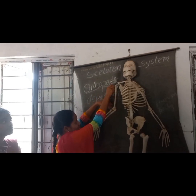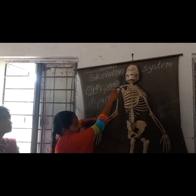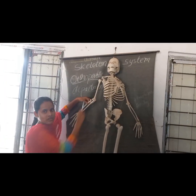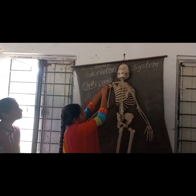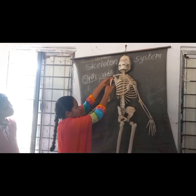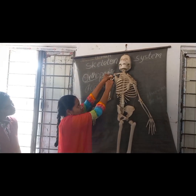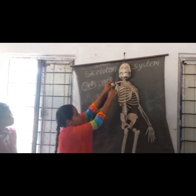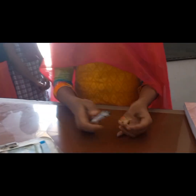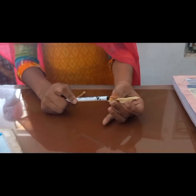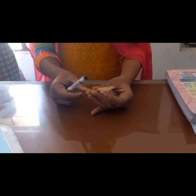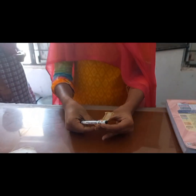Now I am going to explain about the pectoral girdle. The shoulder girdle is the pectoral girdle. This is the shoulder girdle. This is the scapula. The scapula is known as the shoulder blade. There is a glenoid cavity present in the scapula. The head of the humerus bone fits in the glenoid cavity to form the shoulder joint. This is the scapula. This is the glenoid cavity present in the scapula. The head of the humerus bone fits in the glenoid cavity to form the shoulder joint.